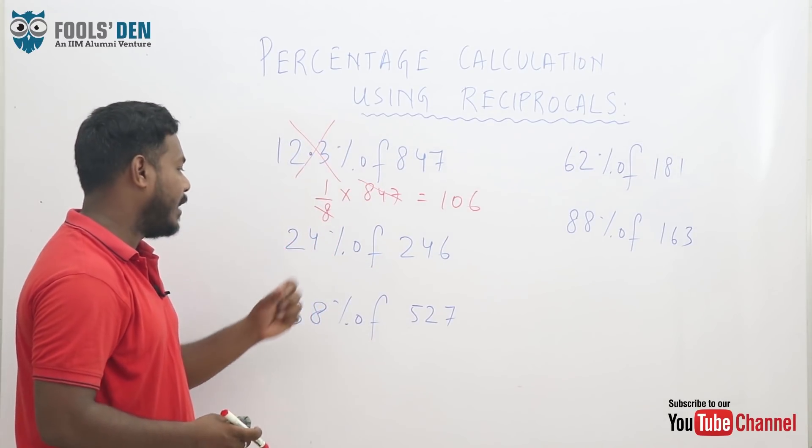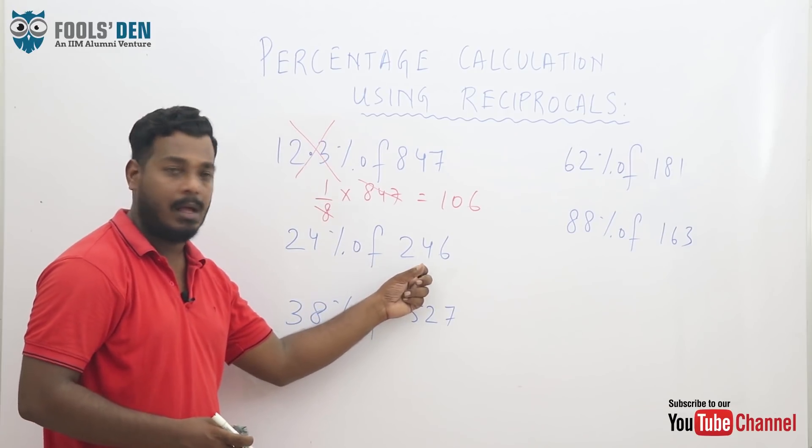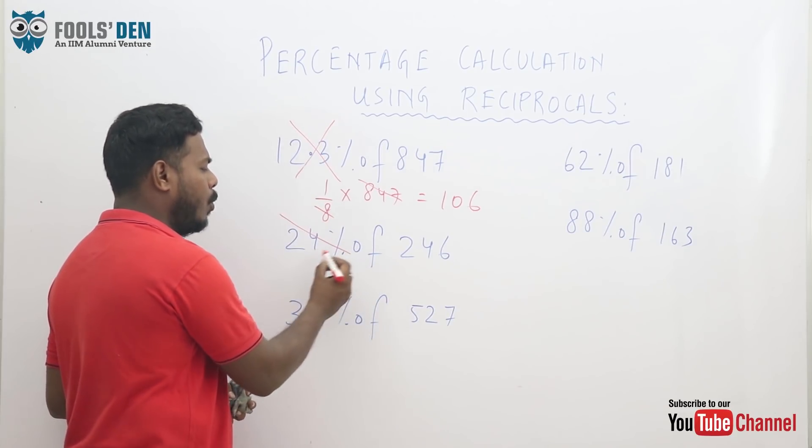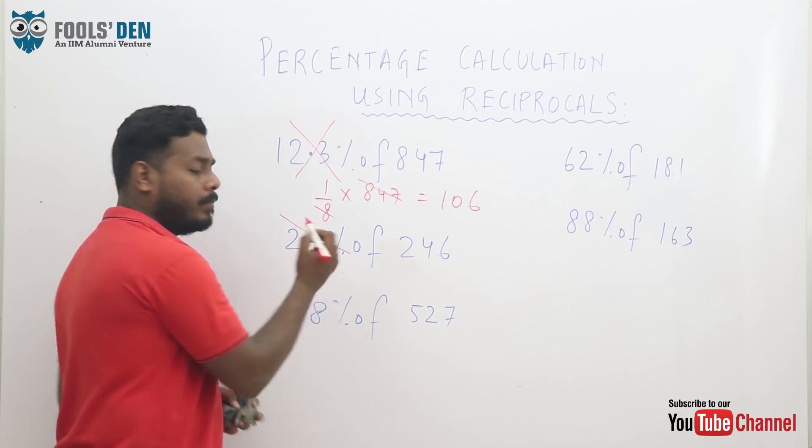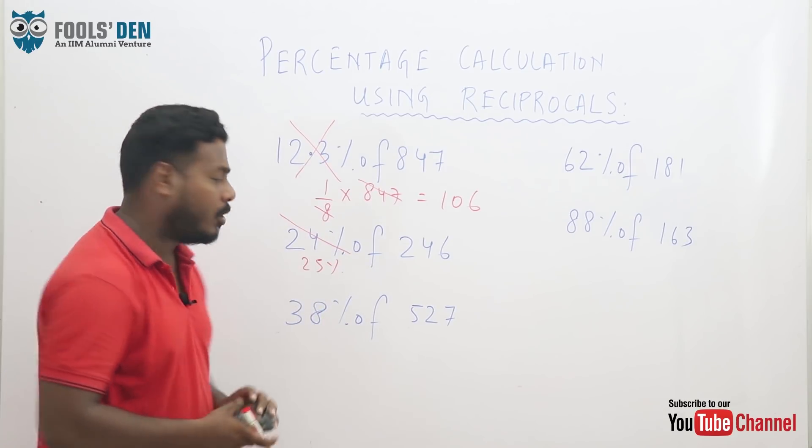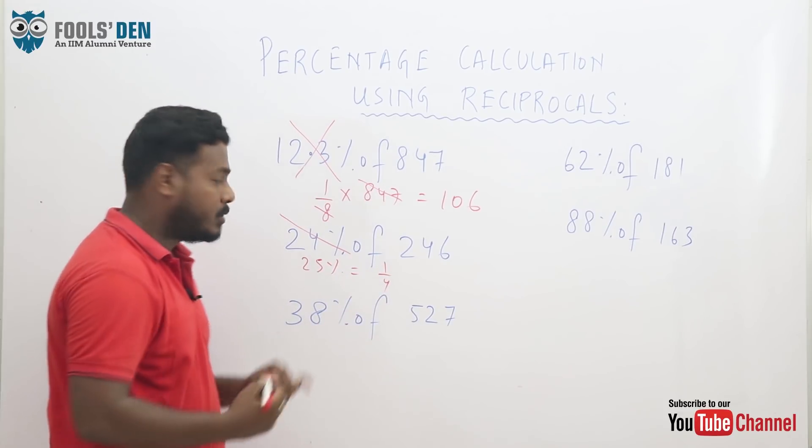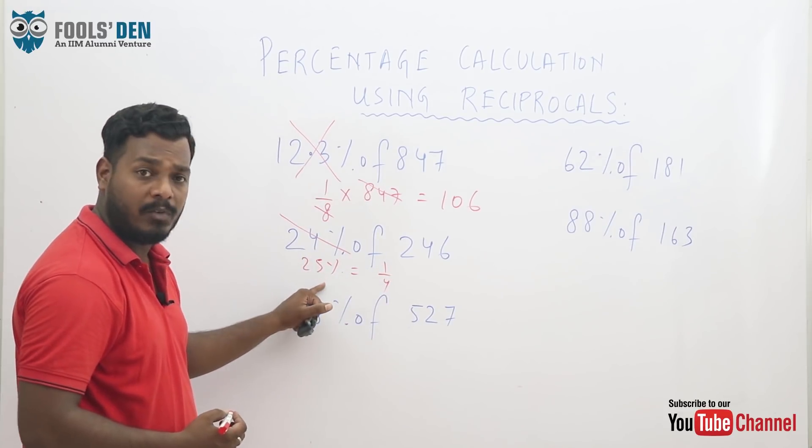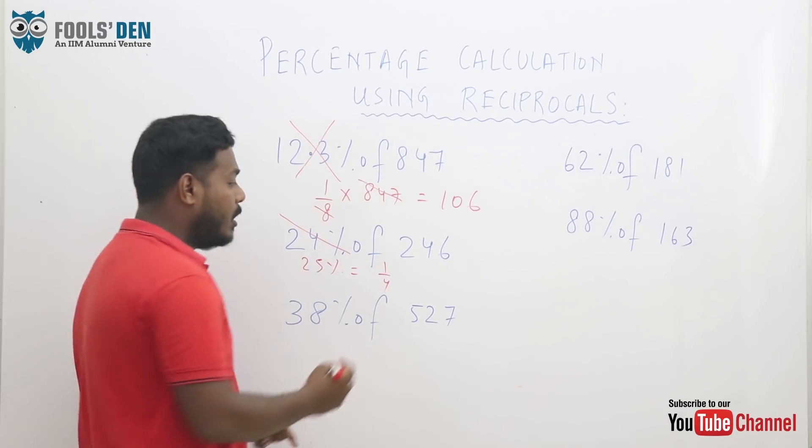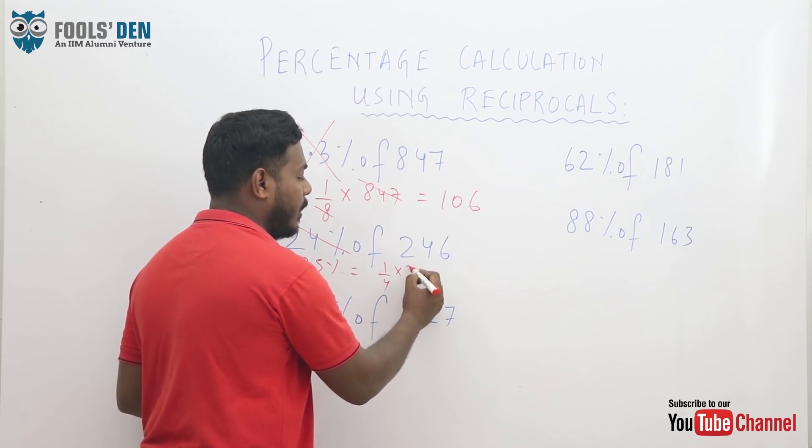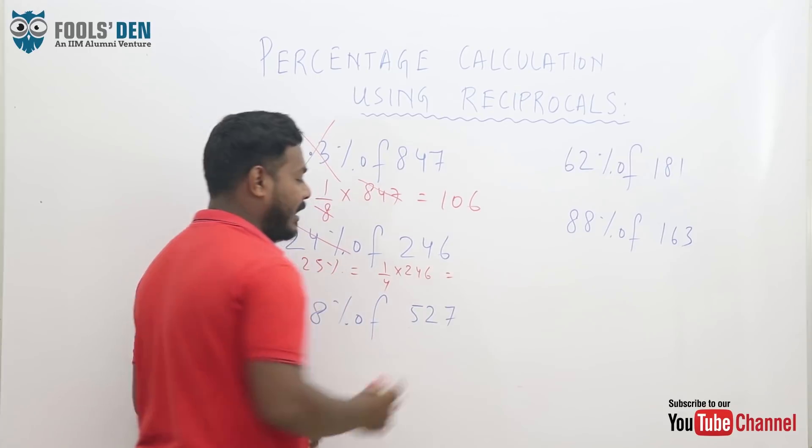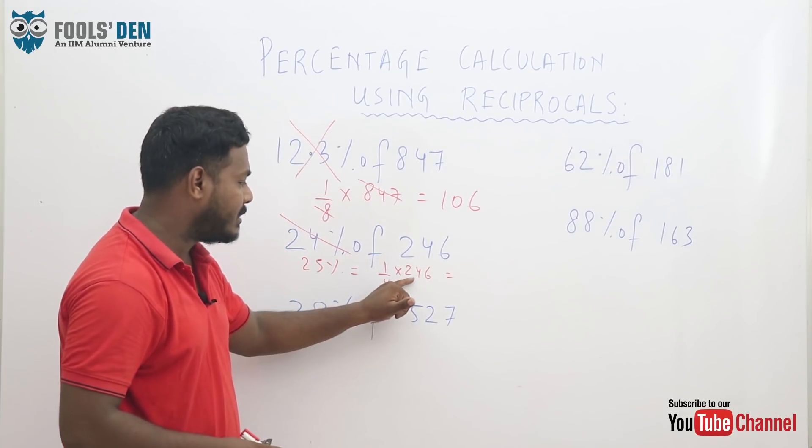Next, suppose you need to calculate 24% of 246. What is 24%? Is this close to 25%? And using the reciprocals concept, 25% is nothing but 1 by 4. So 24 is approximated to 25 and 25 is 1 by 4. So you just need to do one calculation, 1 by 4 of 246, which is quite easy.